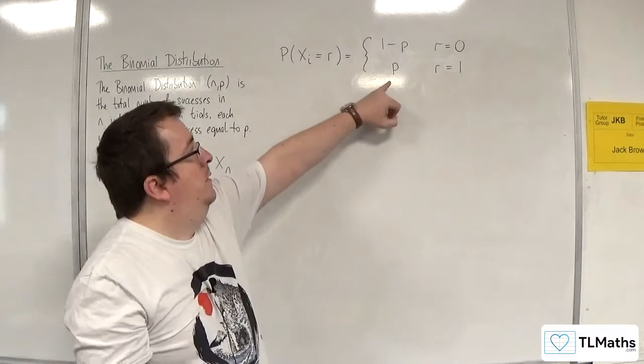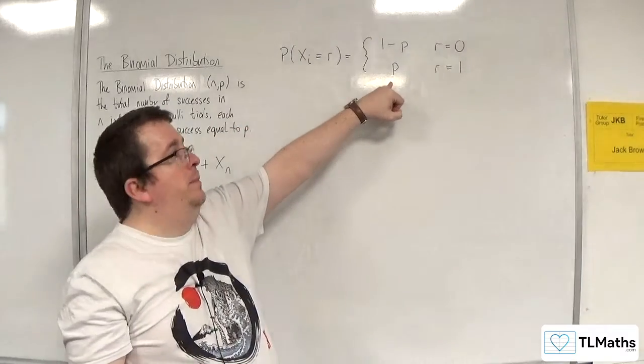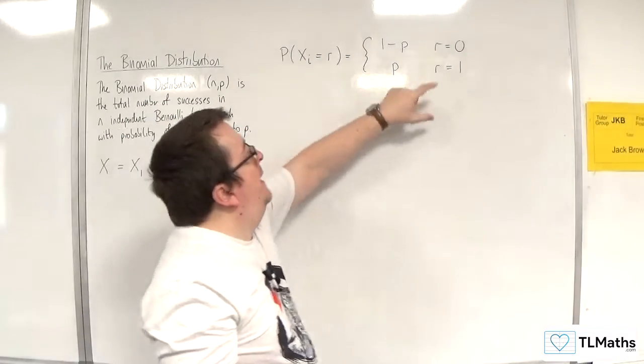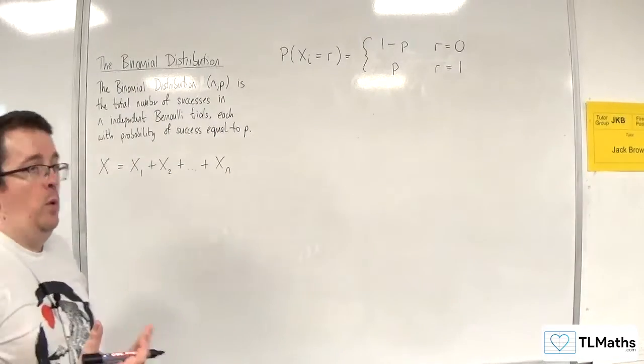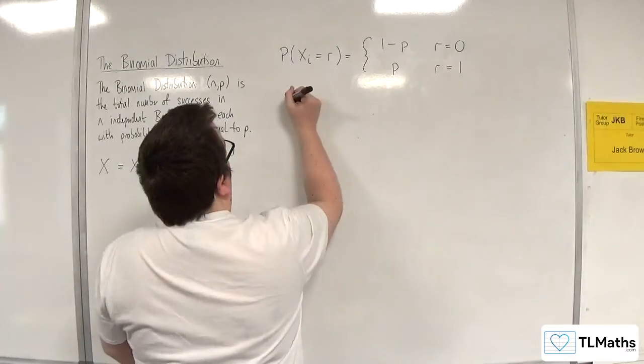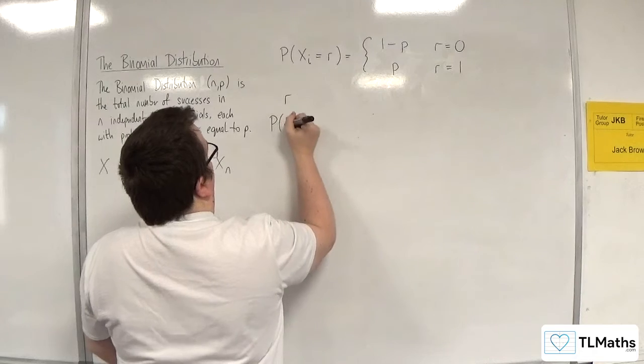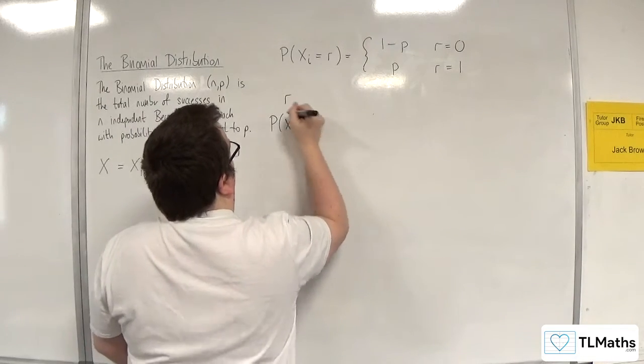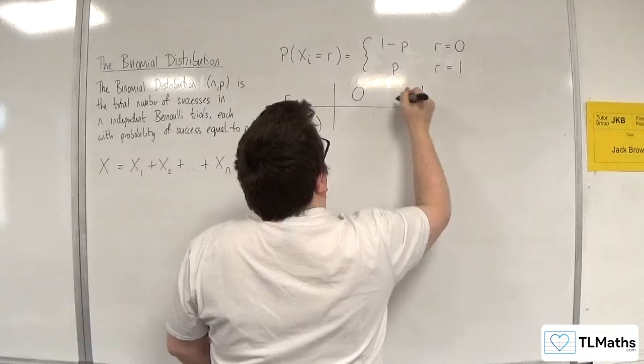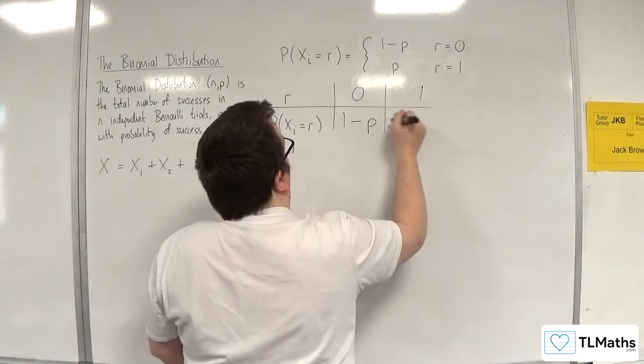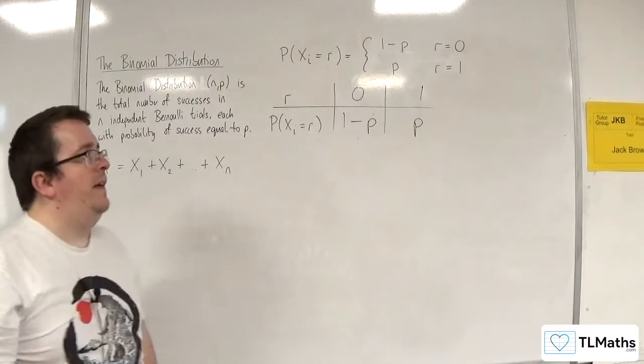So when R is 1, we've got the success, probability is equal to P. And if R is 0, we've got the probability of failure. Now, if you want that in a table, we can have that in a table. So R, probability of X_i equaling R, is going to be 0, 1, 1 minus P and P. That's what it looks like.